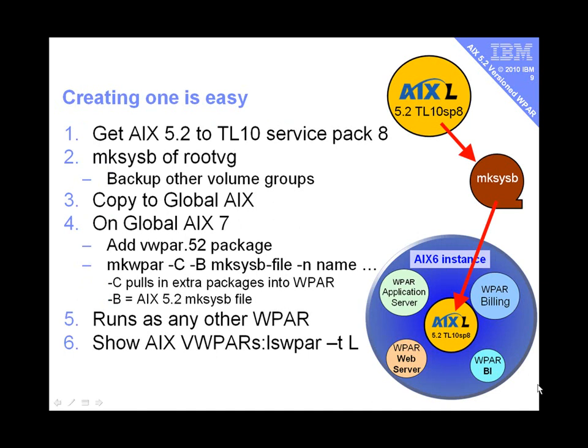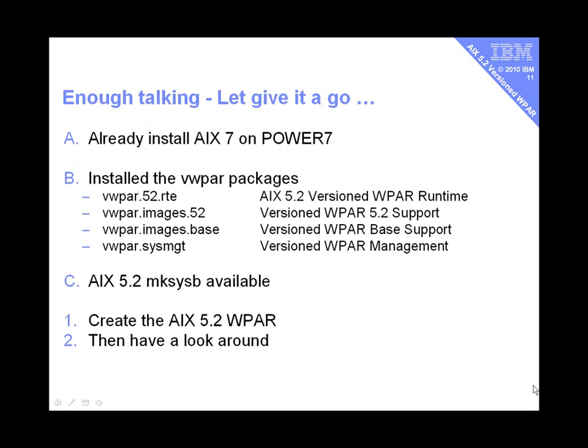So how do we get this all running? You've got to get up to that latest version of 5.2. You take a mksysb of your root volume group — a lot of people do that anyway as a good backup method. You need to back up your other volume groups, perhaps your database or application data. You copy all that to your new AIX 7 running on Power 7. Then you add the package for versioned WPARs, which gives you the new support. Then you run the makewpar command with two extra options: minus C pulls in the extra packages for AIX 5.2, and minus B points to the mksysb file. You can run it as a WPAR, adding other file systems to bring in database or application data. There's also an extra option to the lswpar command — minus T capital L — which shows you the legacy WPARs.